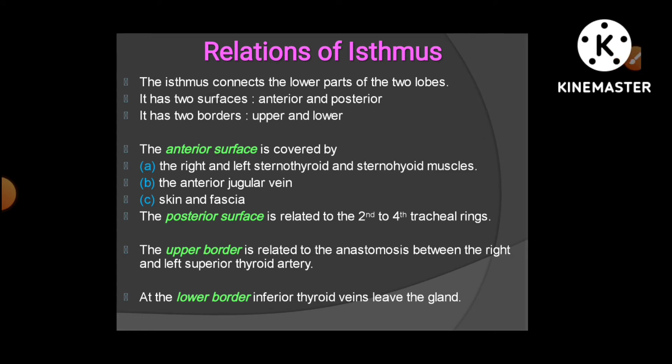The isthmus connects the lower parts of the two lobes. It has an anterior surface, posterior surface, upper border, and lower border. The anterior surface is covered by the right and left sternothyroid and sternohyoid muscles, anterior jugular vein, and skin and fascia. The posterior surface is related to the 2nd, 3rd, and 4th tracheal rings. The upper border is related to the anastomosis between right and left superior thyroid arteries, and the lower border is related to the inferior thyroid vein.